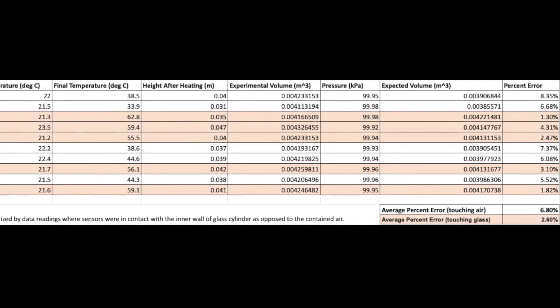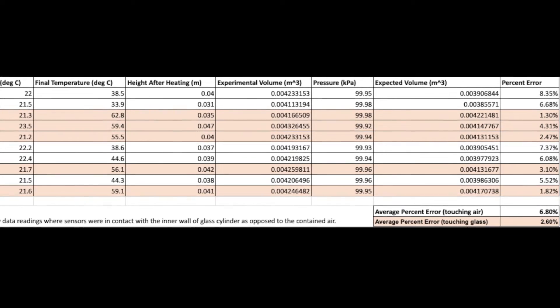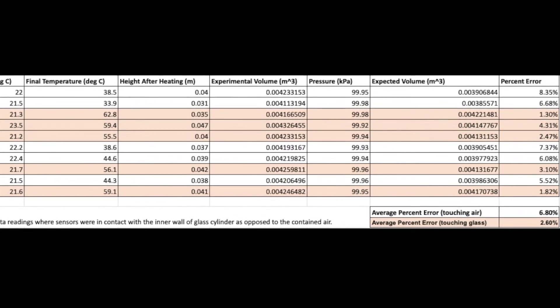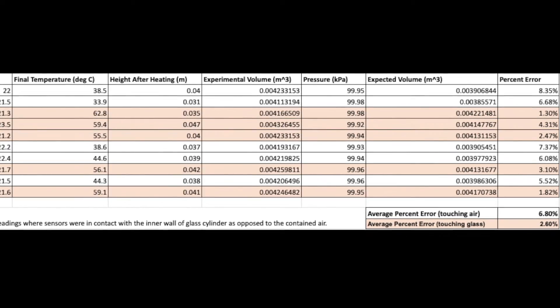A study conducted at Purdue University found that balloons demonstrated Charles' Law within a four percent accuracy. Our data shows that bubbles are a viable alternative to balloons. The trials during which the glass temperature was measured suggest that bubbles could even be more accurate.